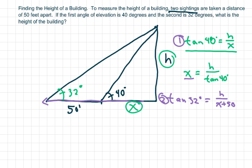Now to find H, if I solve for here, here's my H. So I'm gonna cross multiply here. So H equals X plus 50 times tan of 32.